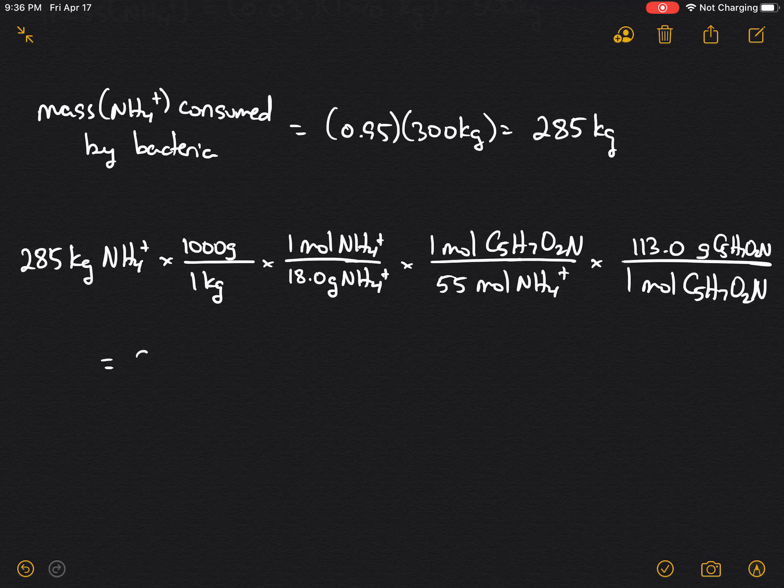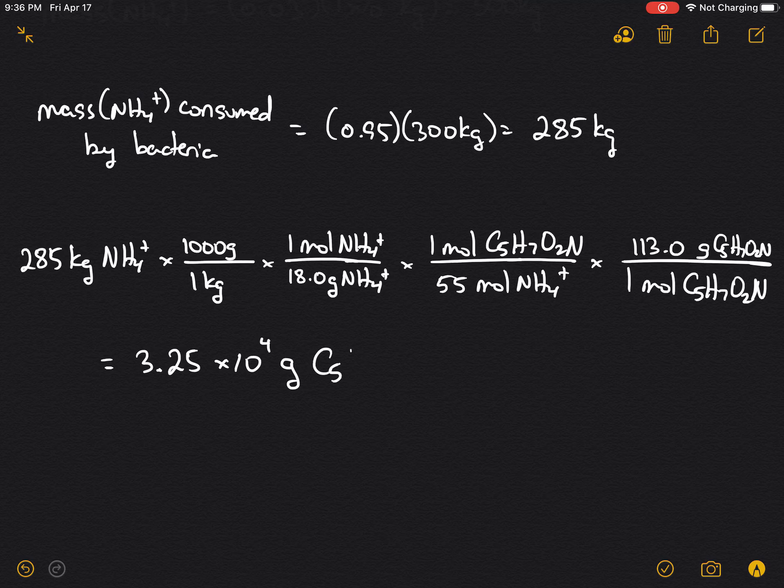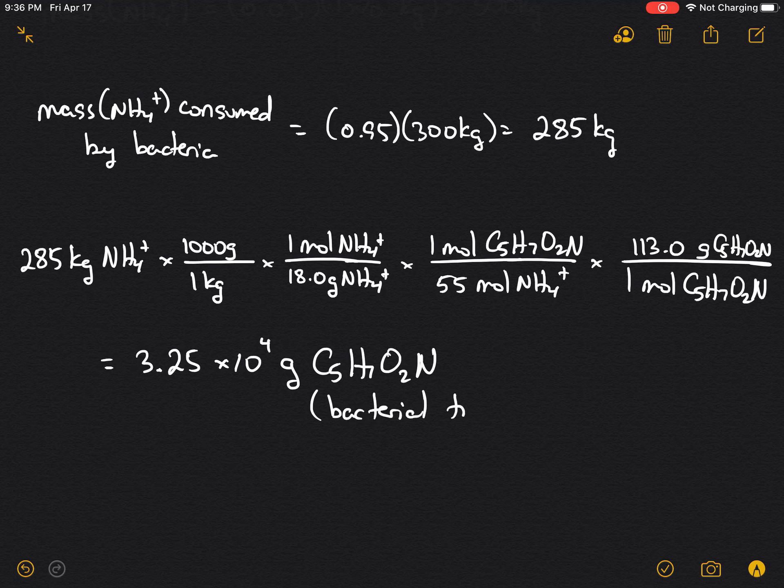Working this all out gives us a mass of bacterial tissue of 3.25 × 10^4 grams of C5H7O2N, and this is our answer.